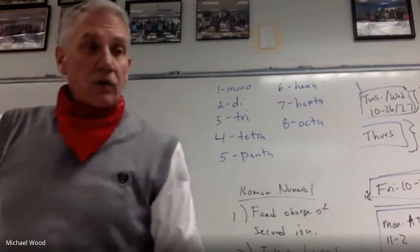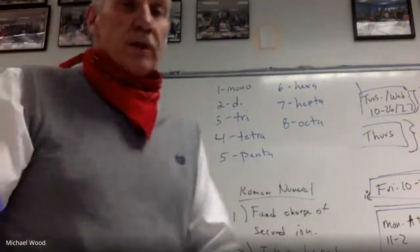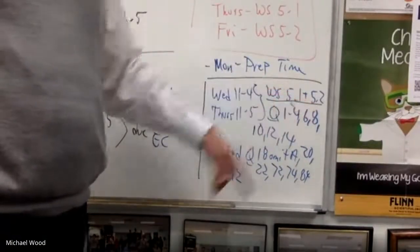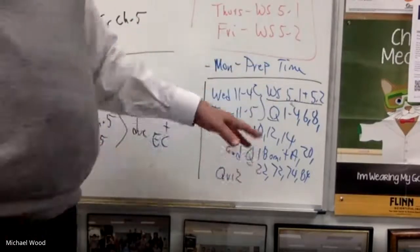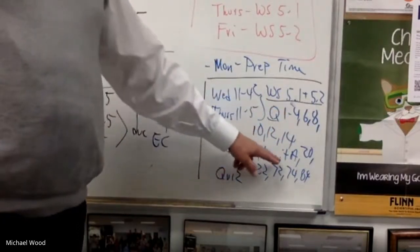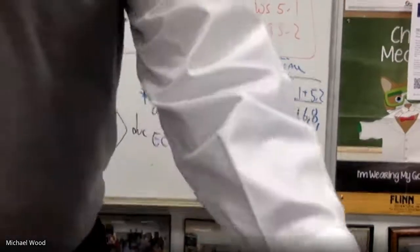Now what I'm working on is worksheet 5.2. Remember what is due on Wednesday, Thursday. You've got two worksheets, worksheet 5.1 and 5.2. We've done a lot of 5.1 on the previous lesson. Now we're going to do a lot of 5.2. And then these problems, 1 through 4, 6-8, 10, 12, 14. And then question 18, omit A in the 20, 22, 72, 74, 84.